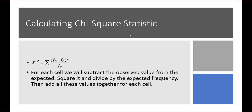Once we have calculated the observed and expected frequencies, we can calculate our chi-square. Chi-square is equal to the sum, for each cell, of our observed frequency minus our expected frequency, squared, divided by the expected frequency. For each cell we take the observed, subtract the expected, square it, divide by the expected, and then add all these values together.